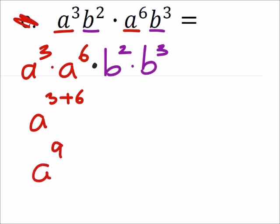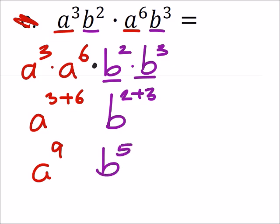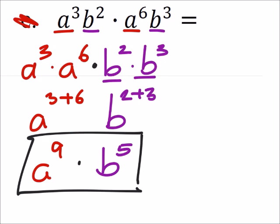Looking at the B's I've got two common B bases, and then I'm going to add the two exponents, which would be B to the power of 5. So A to the power of 9 times B to the power of 5 would be the simplified form of this expression.